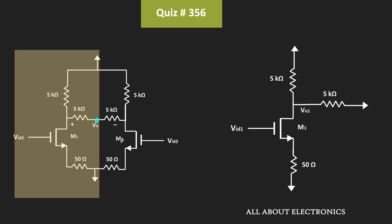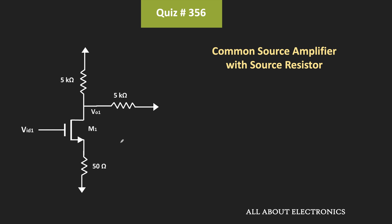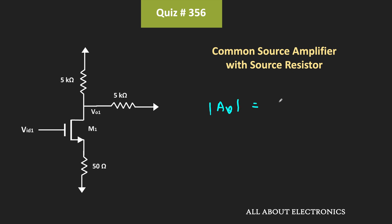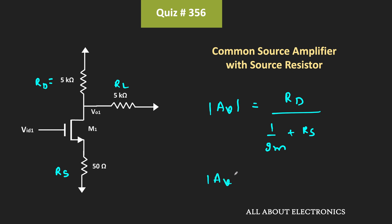Now using this half symmetry, let us find the gain of this half circuit. If you see this circuit, it is the common source amplifier along with the source resistor. On the main channel, for the common source amplifier, we have seen that its voltage gain can be given as Rd divided by (1/Gm + Rs). Here the drain resistor is Rd, the load resistor is Rl, and the source resistor is Rs. These two resistors Rd and Rl are connected in parallel. That means for the given circuit, the voltage gain is equal to (Rd parallel Rl) divided by (1/Gm + Rs). We already know the values of Rd, Rl, and Rs.